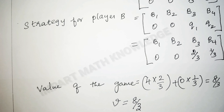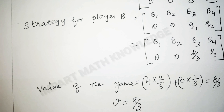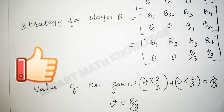To summarize: to apply the dominance property, delete the lesser row and greater column. When the simple method is not possible, use the average method to reduce the game. After applying the average method, the game reduces to a 2x2 game, and then we can use the algebraic, arithmetic, or matrix method — whichever is convenient — to find the optimum strategies for player A and player B and the value of the game using the dominance property.